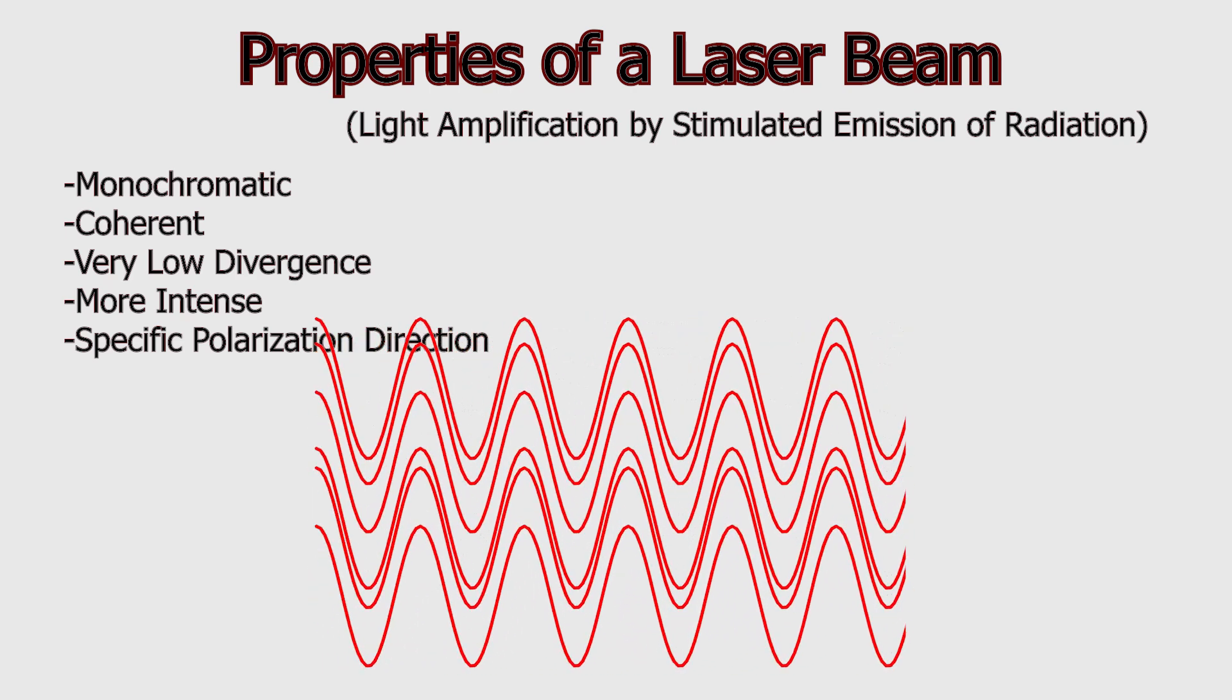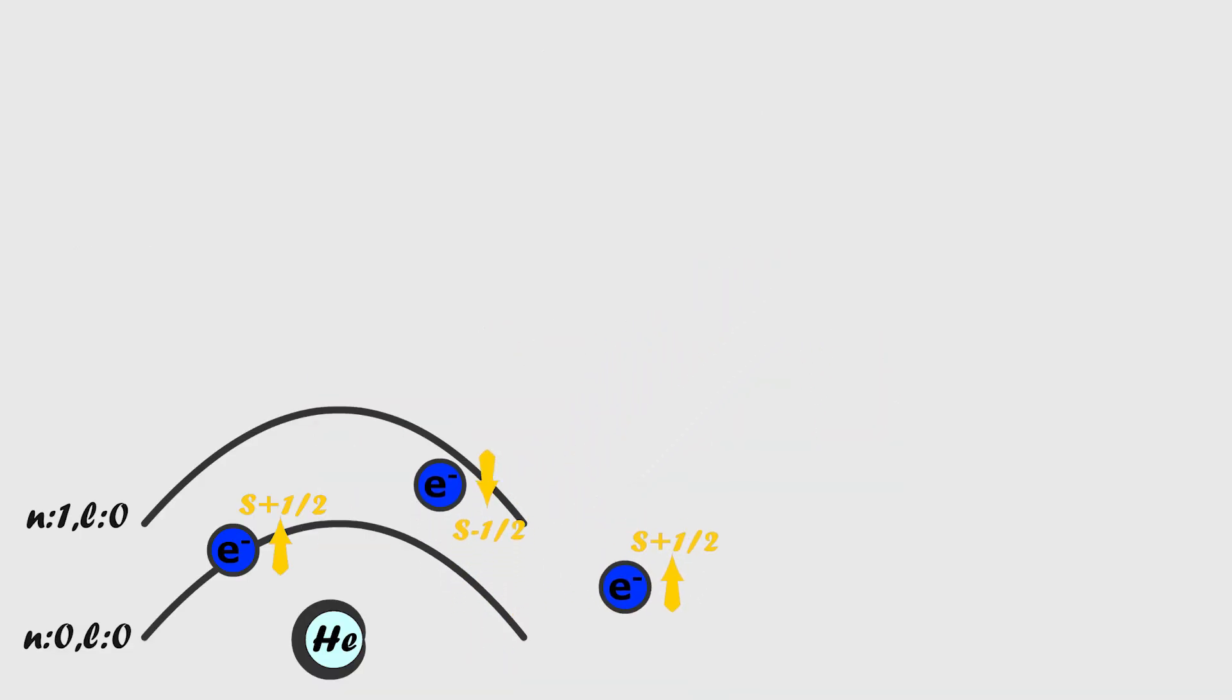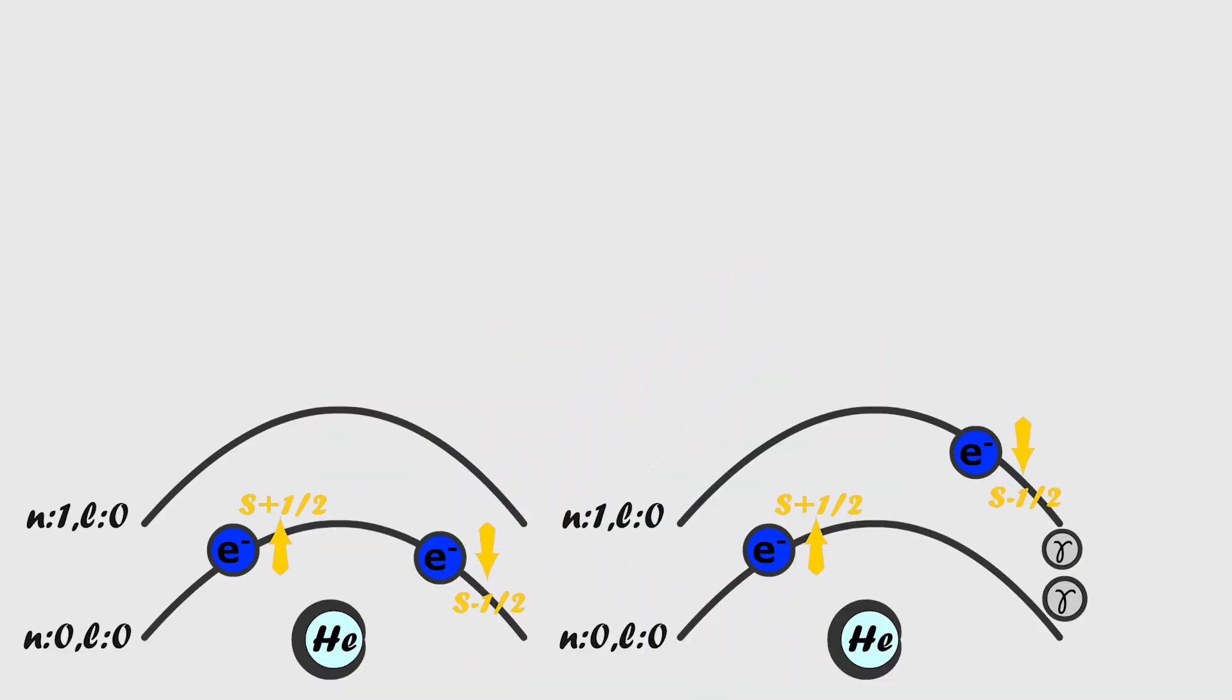So how are these properties achieved? In fact, they are made possible by another feature of quantum mechanics. This feature ensures that when a photon interacts with an excited electron, it triggers the emission of a photon from that electron, allowing it to return to its stable state.